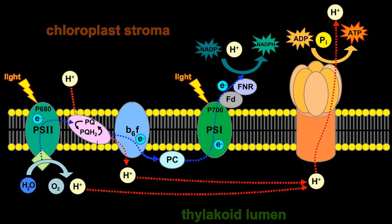PS2 is extremely complex — a highly organized transmembrane structure that contains a water-splitting complex, chlorophylls and carotenoid pigments, a reaction center P680, pheophytin (a pigment similar to chlorophyll), and two quinones. It uses the energy of sunlight to transfer electrons from water to a mobile electron carrier in the membrane called plastoquinone.